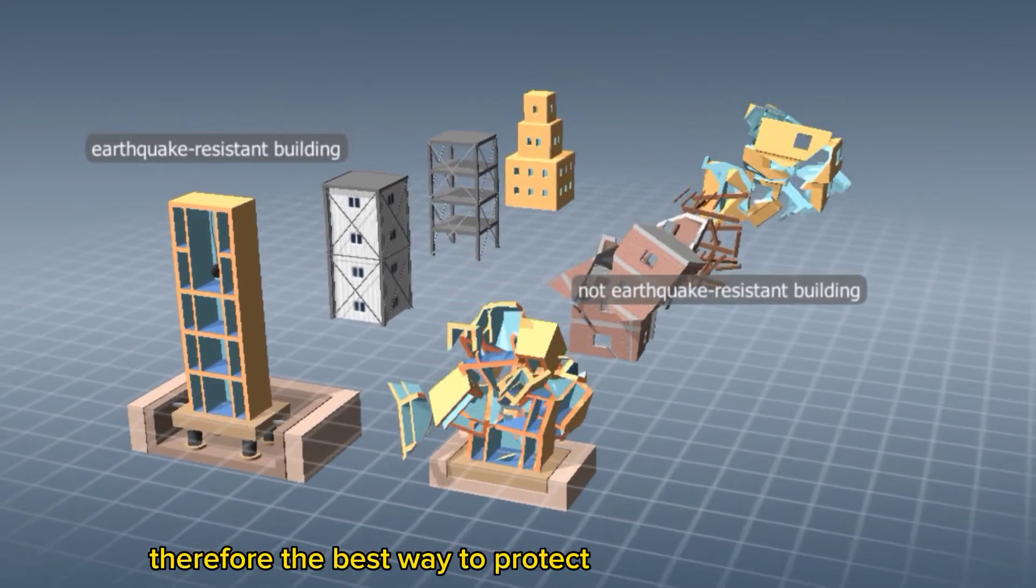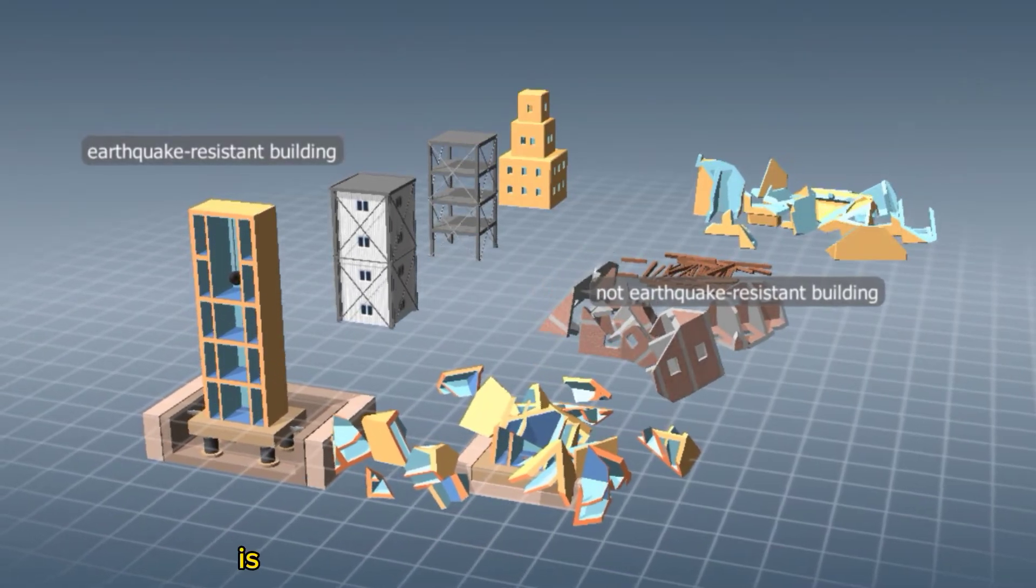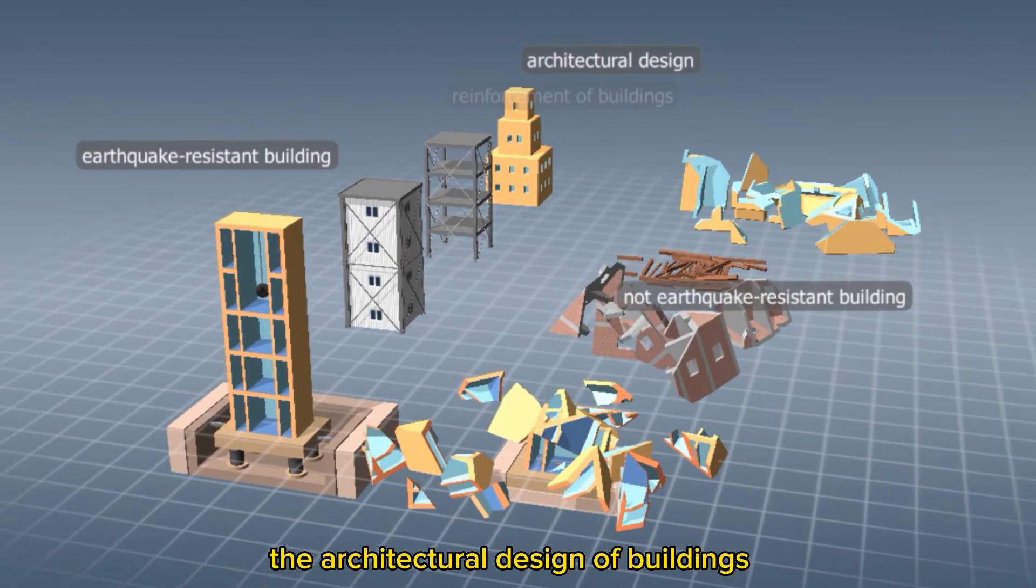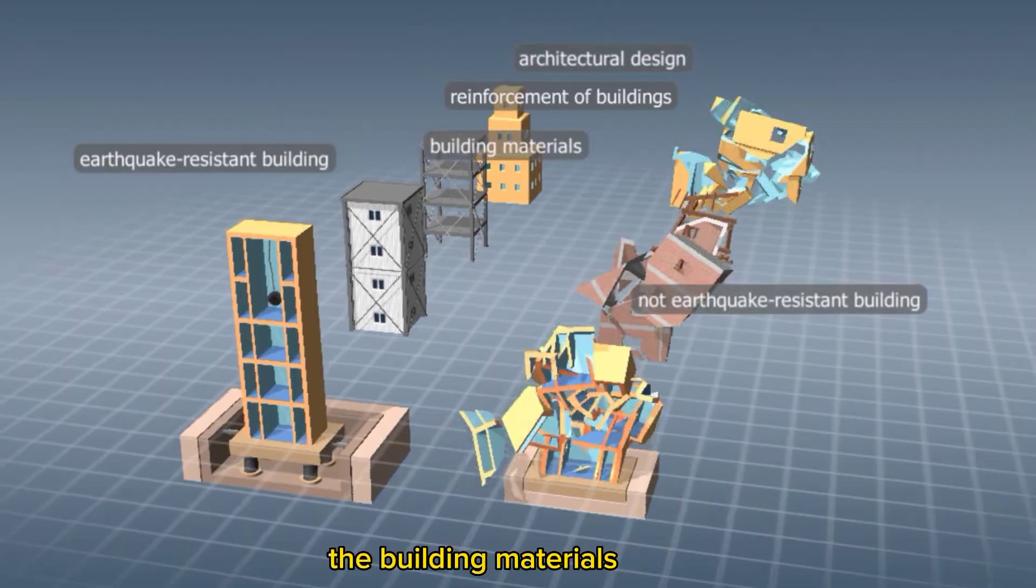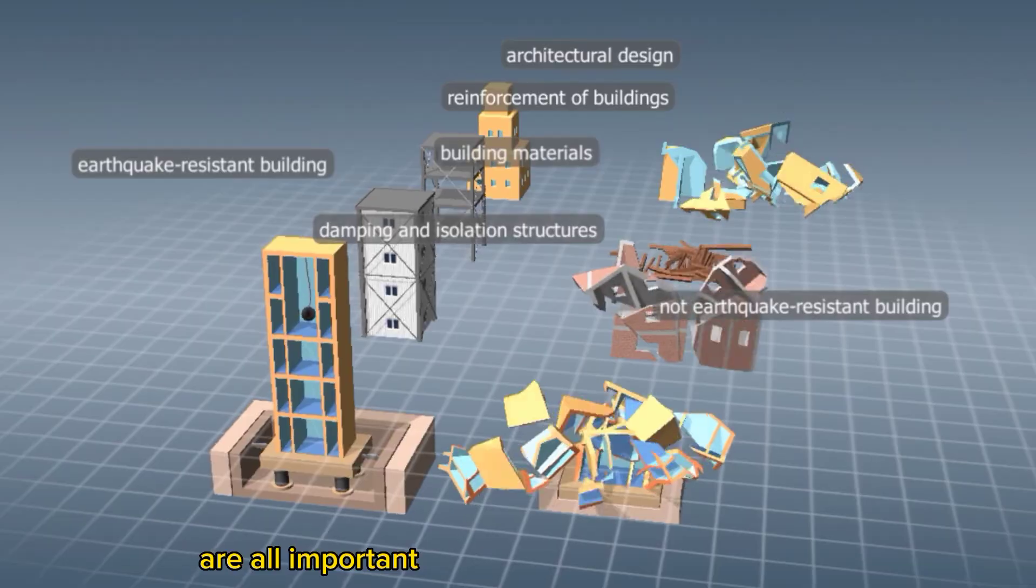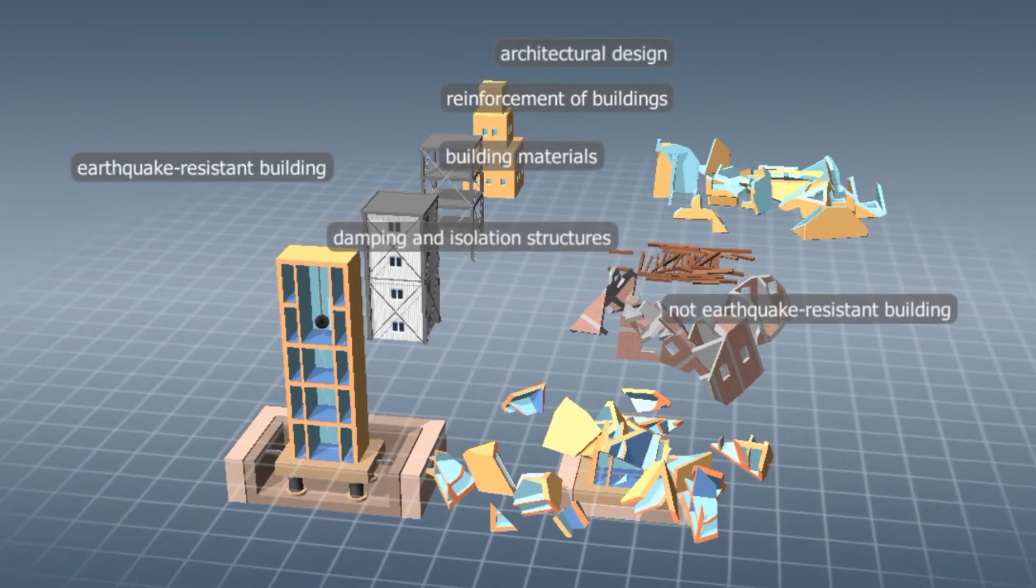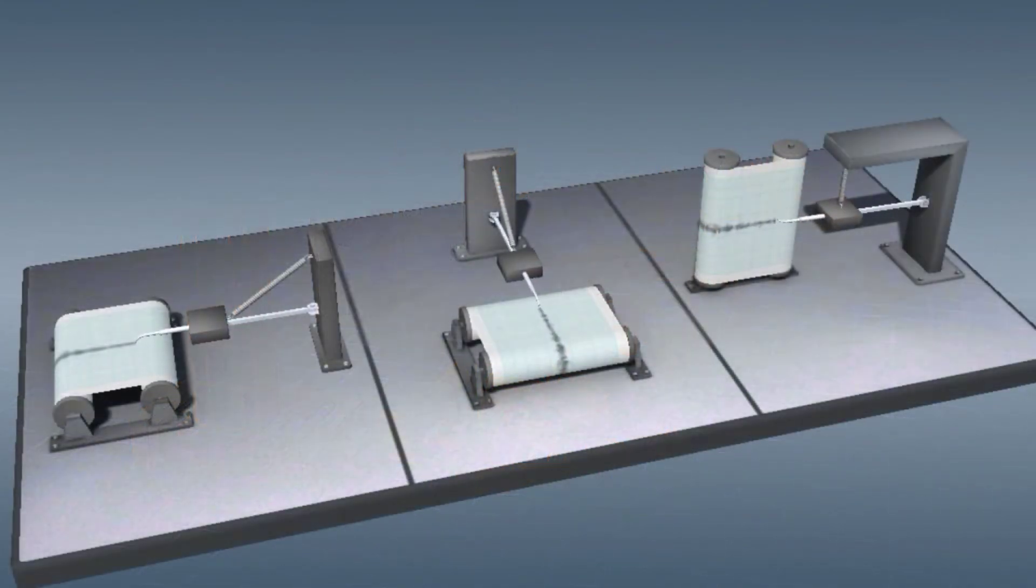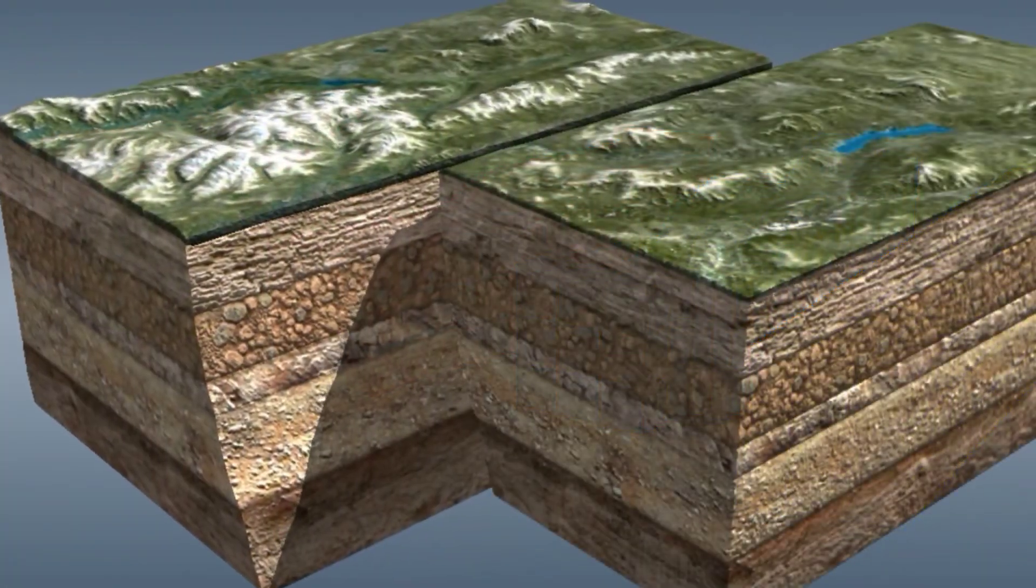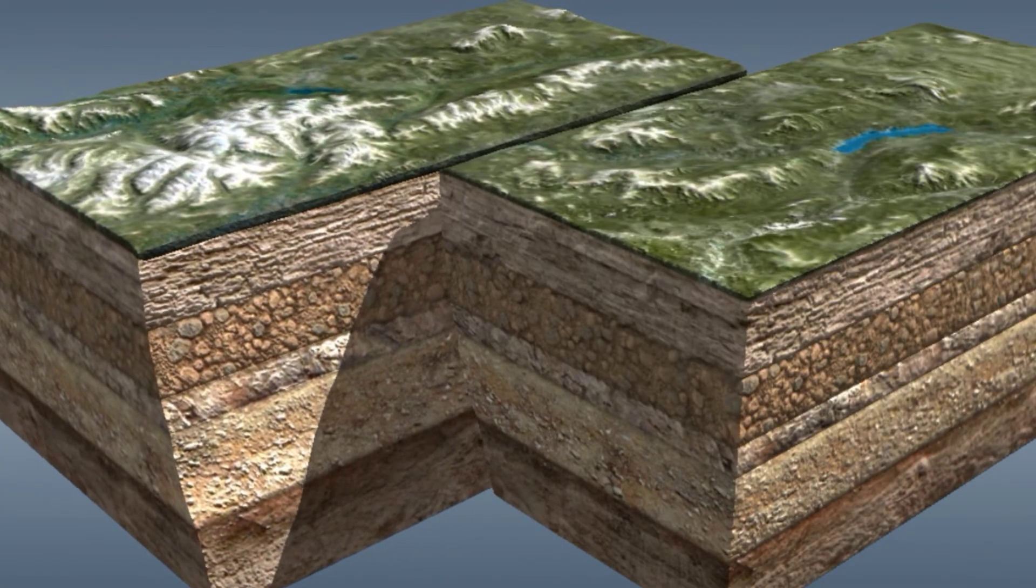Therefore, the best way to protect against earthquakes in seismic areas is to build earthquake-resistant buildings. The architectural design of buildings, their reinforcement, the building materials used, and seismic isolation and damping structures are all important in terms of seismic resistance.